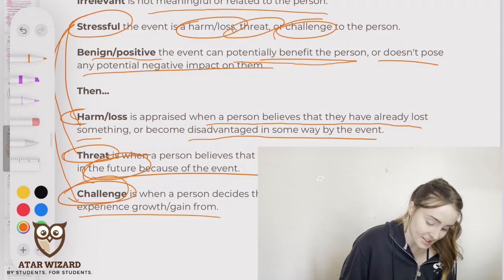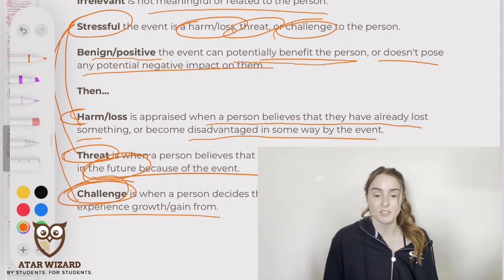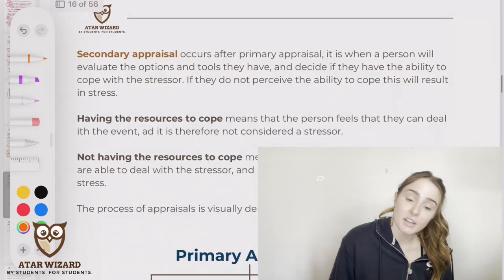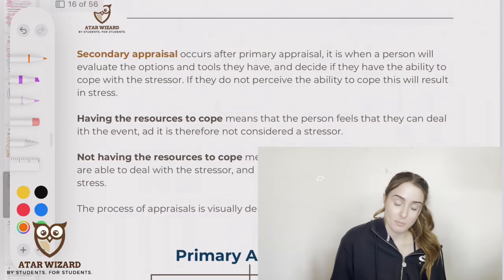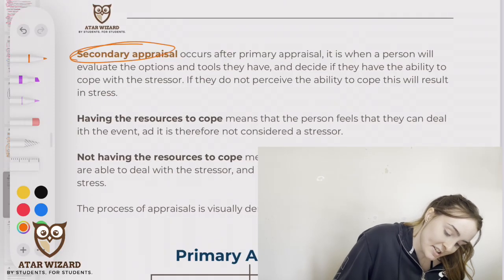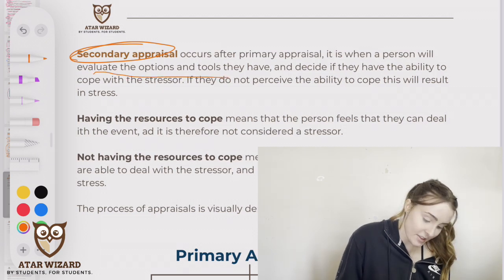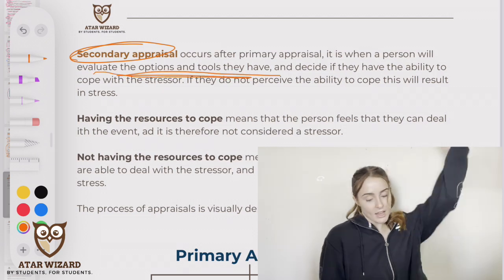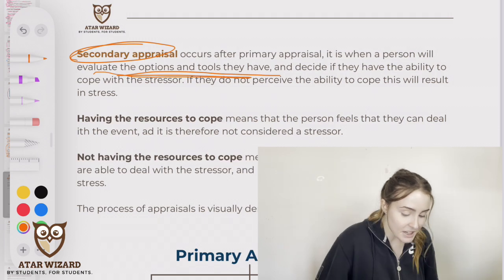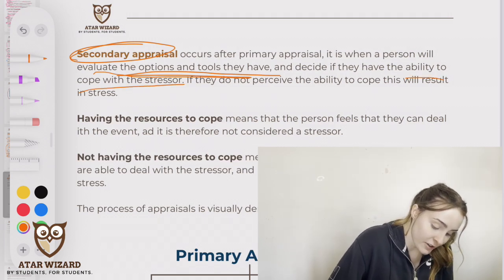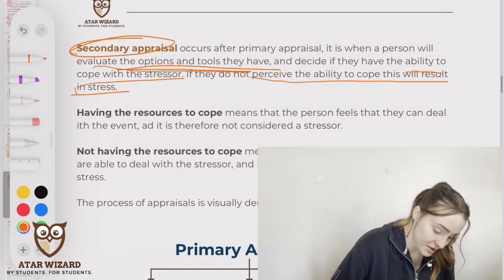It's stressful but it's a challenge — an opportunity to prove something. After primary appraisal, secondary appraisal occurs, and this is when a person evaluates the options and tools they have and decides if they have the ability to cope with the stressor. If they do not perceive the ability to cope, this will result in stress.